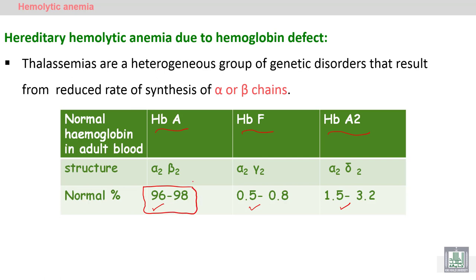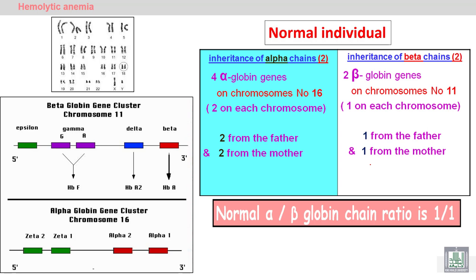Hemoglobin A consists of two alpha and two beta chains. Hemoglobin F consists of two alpha and two gamma chains. Hemoglobin A2 consists of two alpha and two delta chains. Beta globin synthesis begins around six months after delivery. Before that, we have alpha and gamma chains forming hemoglobin F; after six months, alpha and beta chains form hemoglobin A.